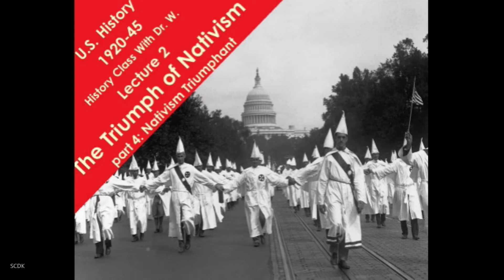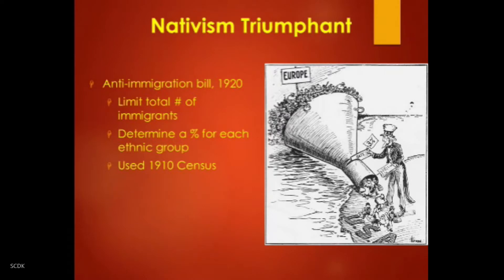Welcome back to history class with Dr. W. We're continuing our discussion of 1920 to 1945, and in this section, the triumph of nativism in the early to mid-1920s. In this fourth and final installment of this part of the lecture, we're going to talk about nativism triumphant, which is exemplified in the Immigration Act of 1924. In the previous lectures we've talked about the Red Scare, the Ku Klux Klan, and the predominant feeling of nativism — that is, fear of immigrants — that persisted in the early to mid-1920s.